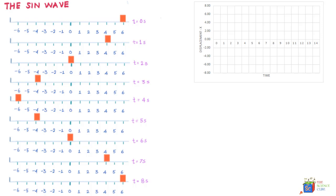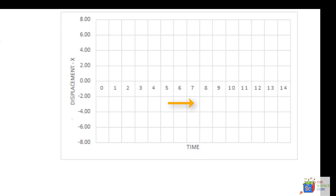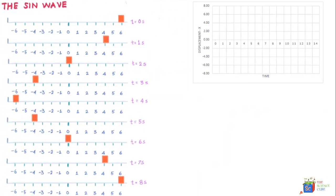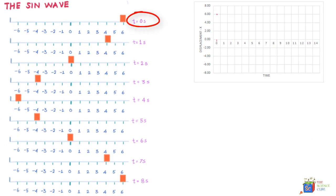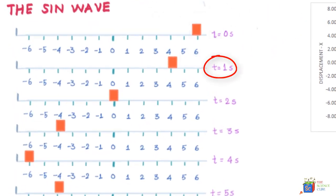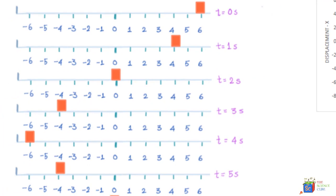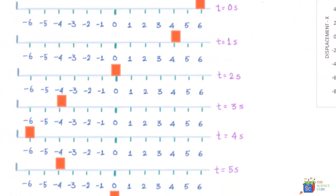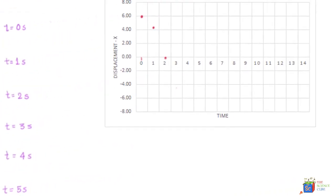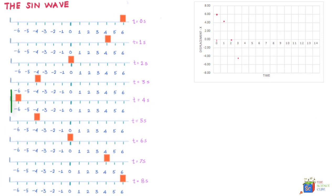Let us plot the position of this mass with respect to time, with time on the horizontal axis and position on the vertical axis. At t = 0, its position is six meters. At t = 1 second, it's 4.24 meters. At t = 2 seconds, it is at the zero meter mark. At t = 3 seconds, it is at minus 4.25 meters. At t = 4 seconds, it is at minus six meters — the extreme left.